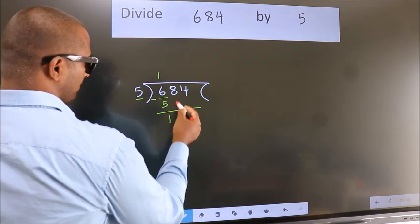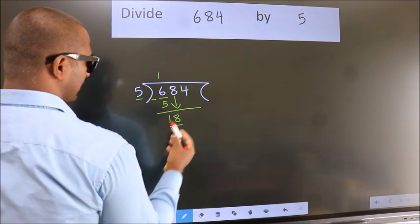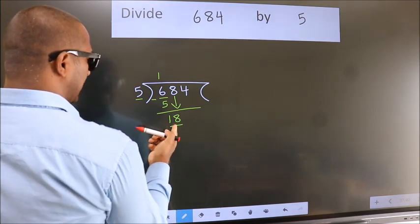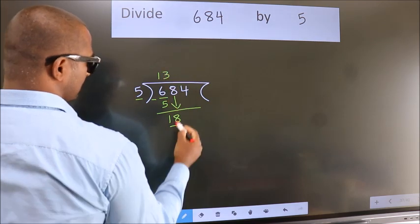After this, bring down the beside number. So 8 down. So 18. A number close to 18 in 5 table is 5 3s 15.